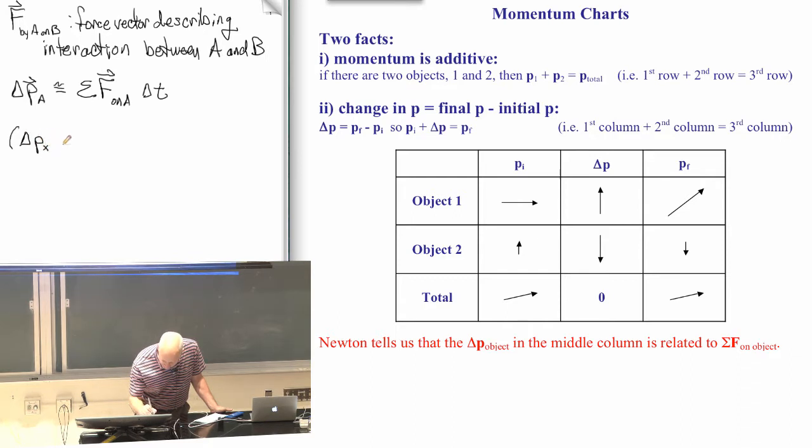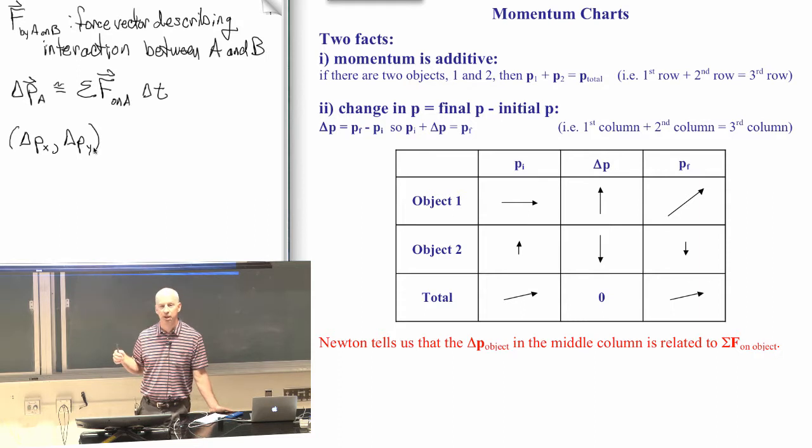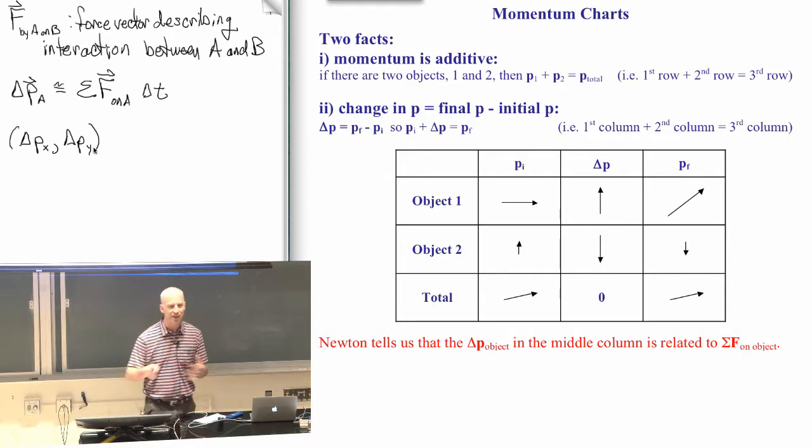You can write a vector like delta p in terms of the components, the x and y components, the horizontal and vertical parts of it. You could also write a z component, but that makes it three dimensional. And I'm not going to do much of that.